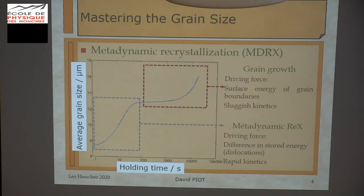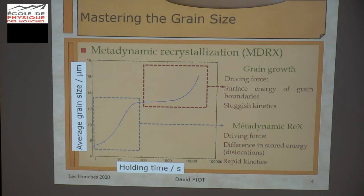In the case of metadynamic recrystallization, during a holding time just after straining, you have first a regime of metadynamic recrystallization in which the main driving force is a difference in stored energy, and the kinetics is quite rapid — you have a log scale here — and after, a regime of grain growth in which the main driving force is the surface energy of grain boundaries, so the kinetics is much slower in this case.